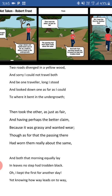Now let's move to the Hindi explanation. So here our poet is in a jungle and has two routes going in different directions. We have to choose one route. When we look at the first route, we find that there are many people on the road and there are many trees and bushes.